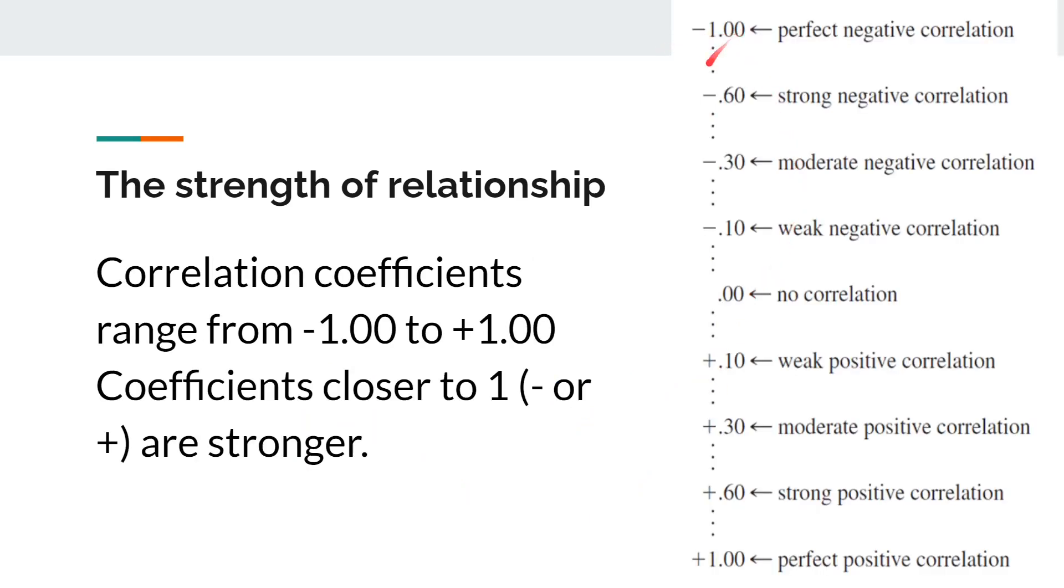This is a chart that you can use in interpreting the strength of relationship. I got this from the book of Fox and Levin. This is saying to us that correlation coefficients range from negative 1 to positive 1. So, if someone tells you that the correlation is 2, then that's no longer believable because correlation is only from negative 1 to positive 1. And the closer it is to 1, the stronger it is, regardless of the sign. In telling if a relationship is strong or not, you don't have to look at the sign because the sign is the one telling us about the direction.